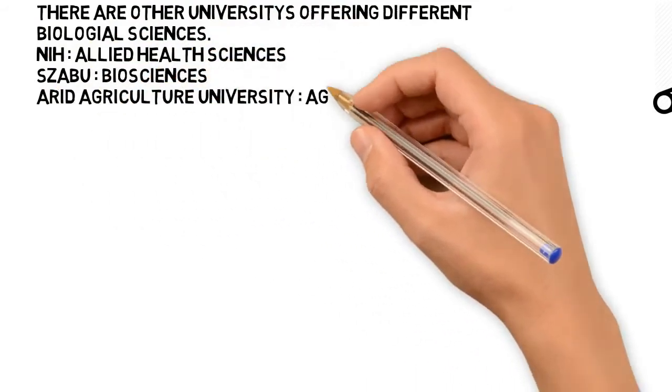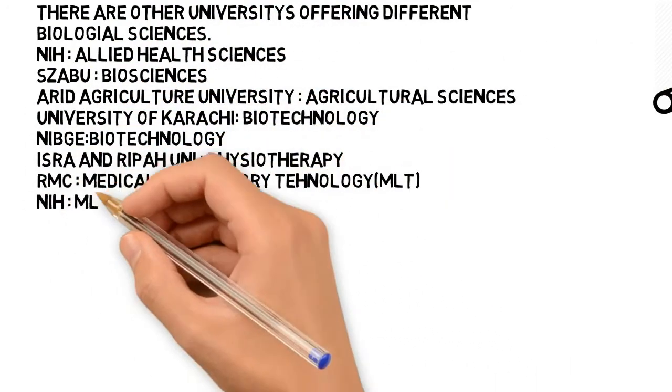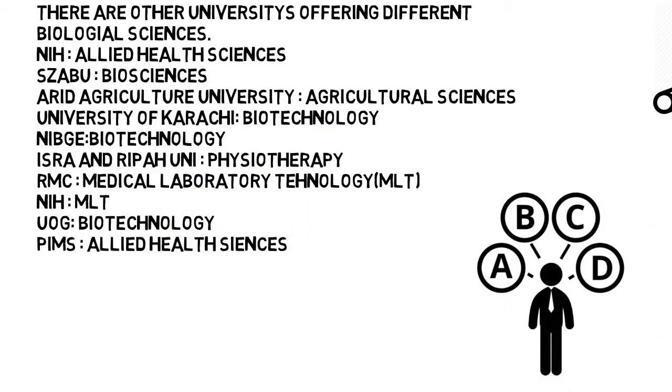Like NIH and PIMS, they are offering allied health sciences. NIBJ, Uni of Karachi and UOG offers biotechnology. You should select whatever suits you.